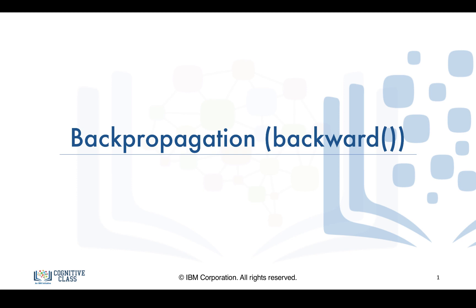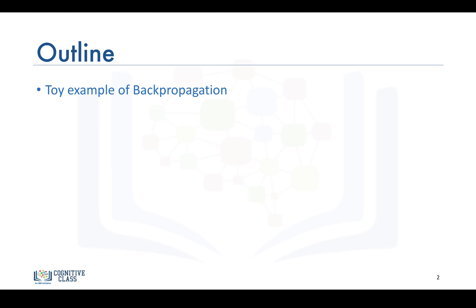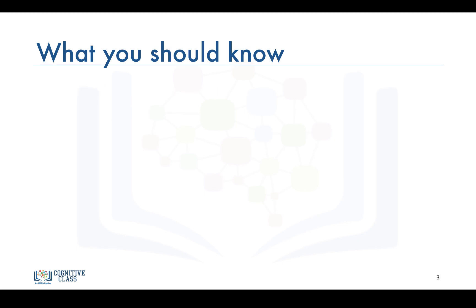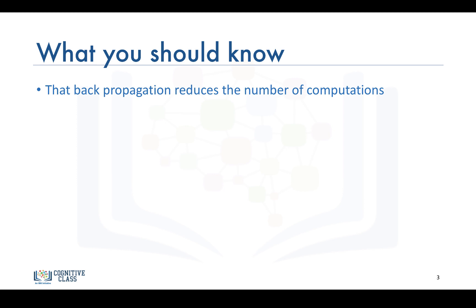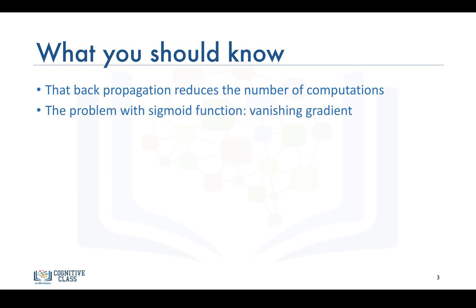In this video, we're going to discuss backpropagation. In particular, we'll do a toy example of backpropagation, and we'll discuss the vanishing gradient. There's a lot of math in this section, and I don't want you to worry about that. All I want you to take away from this section is that backpropagation reduces the number of computations involved in calculating the derivative, and the problem with the sigmoid function — i.e., the vanishing gradient.